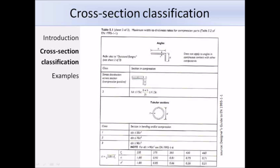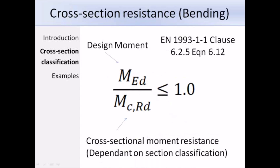To ensure the cross-section resistance to bending is adequate, the following equation must be satisfied: M_Ed divided by M_c,Rd must be less than or equal to 1. This is expression 6.12, meaning the design moment M_Ed must be less than the cross-section moment resistance M_c,Rd. The equation to calculate M_c,Rd depends on the class of the section, as shown in the following slides.